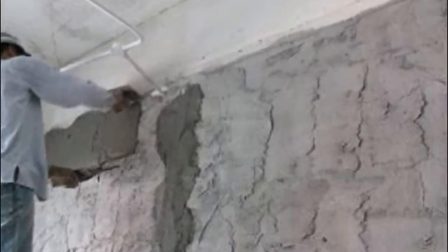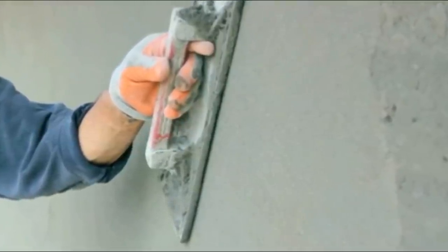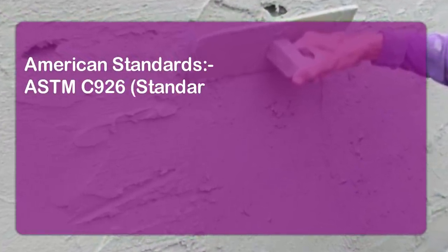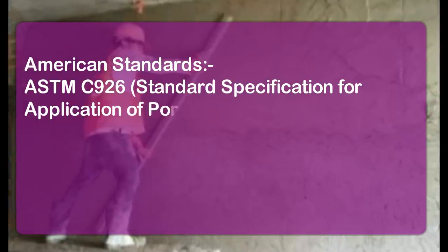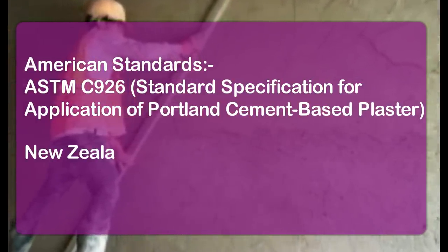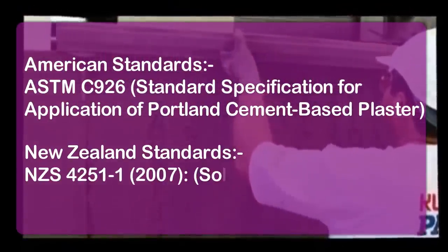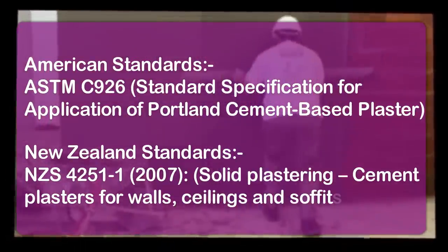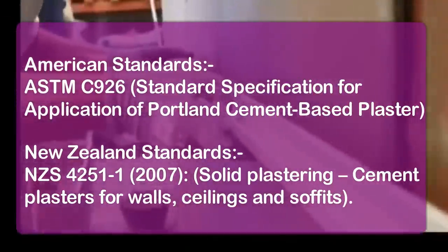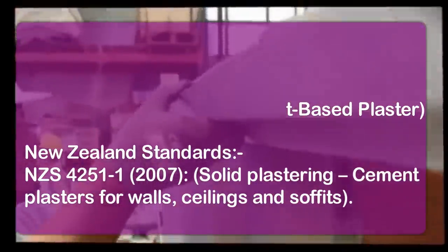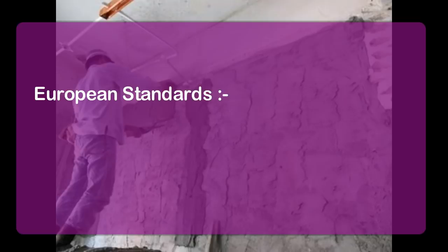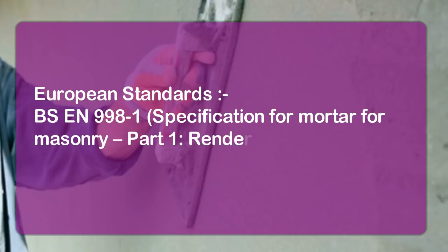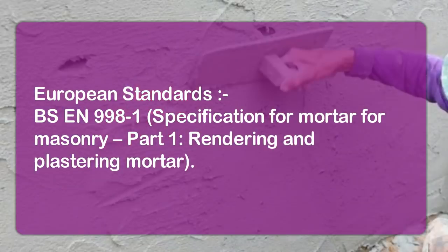There are different codes and specifications used for plastering work. ASTM C926 is the standard specification for application of Portland cement based plaster, which is an American standard. NZS 4251-2007 covers solid plastering cement plaster for walls, ceilings, and soffits — that is the New Zealand standard. BS EN 998-1 is the specification for mortar for masonry Part 1: rendering and plastering mortar, which is a European standard.